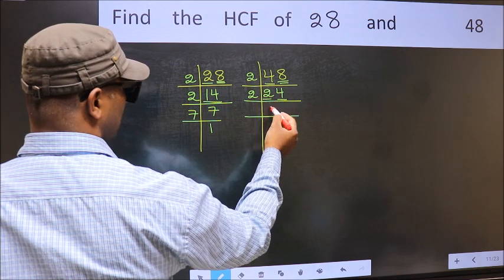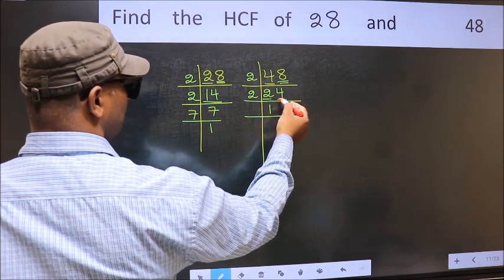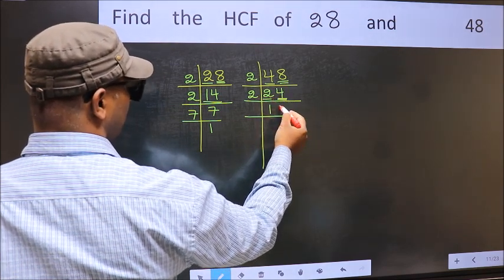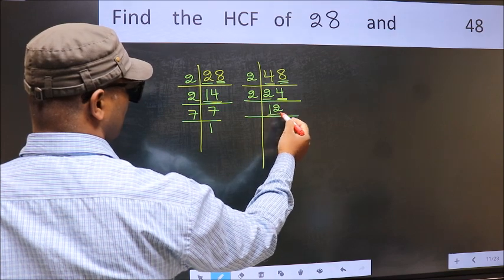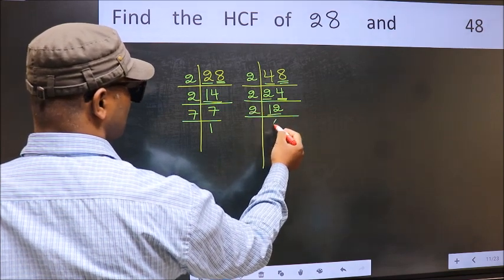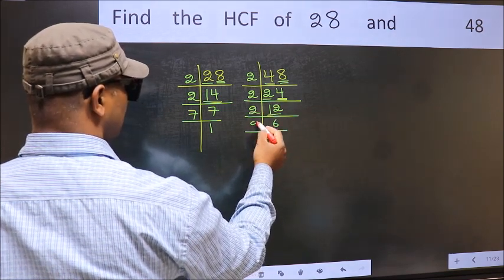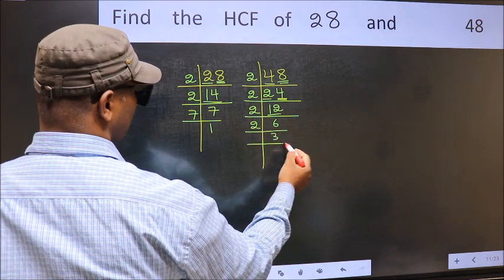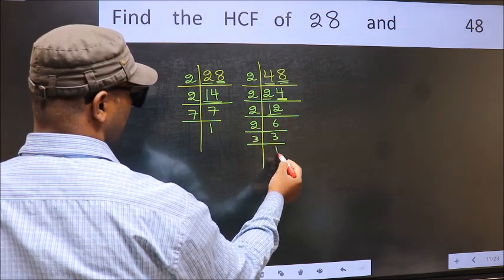First number is 2. When do we get 2 in the 2 table? 2 times 1 is 2. The other number is 4. When do we get 4 in the 2 table? 2 times 2 is 4. Now 12 is 2 times 6 is 12. 6 is 2 times 3 is 6. Now 3 is a prime number, so 3 times 1 is 3.